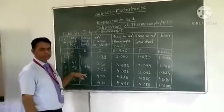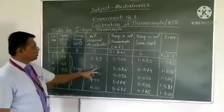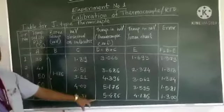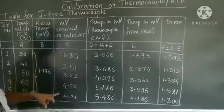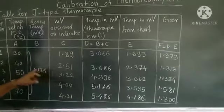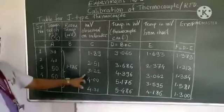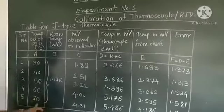Now you can see in the table I have put the values for 5 readings. These are millivolts observed on indicator. This is 1.89 for 30 degrees centigrade, 2.51 for 40, 3.22 millivolts for 50 degrees, 4 millivolts for 60 degrees, and 4.31 for 70 degrees centigrade.